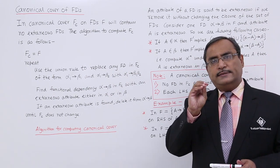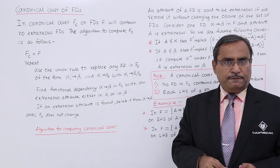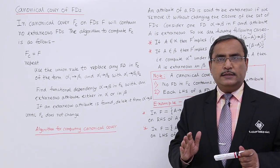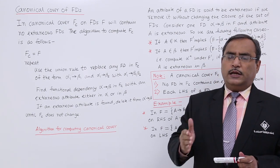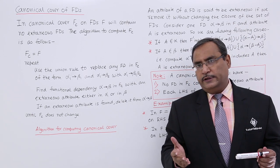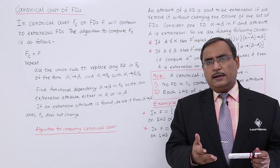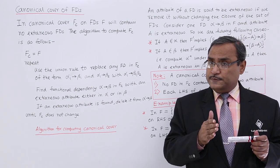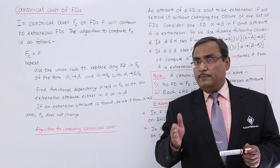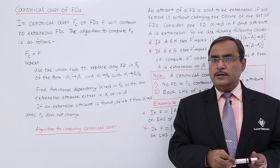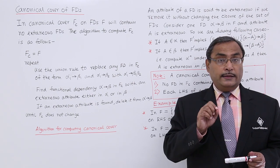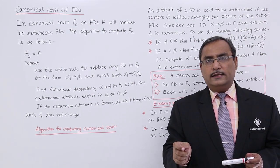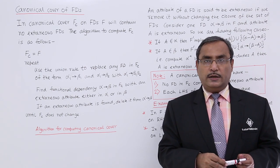One set of functional dependencies, let it be capital F, will be given to us. F contains the set of functional dependencies which are given to us. Some functional dependencies within that set might be redundant or might have some redundant or extraneous attributes. In the canonical cover fc obtained from F, there will be no redundant functional dependencies, and there will be no extraneous attribute either on the left-hand side or on the right-hand side of the functional dependencies.